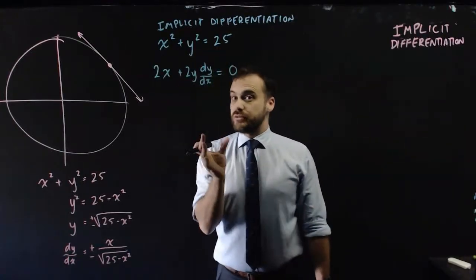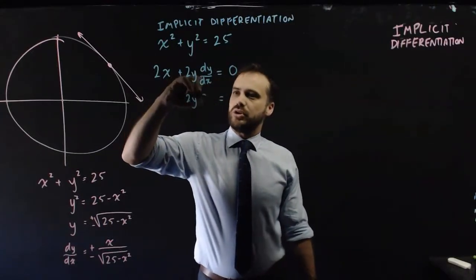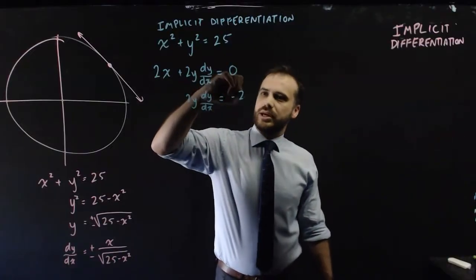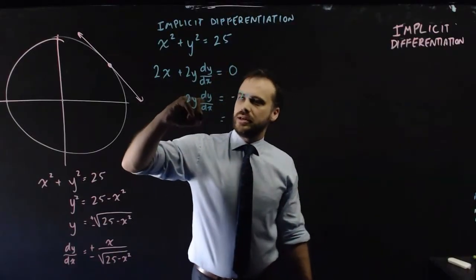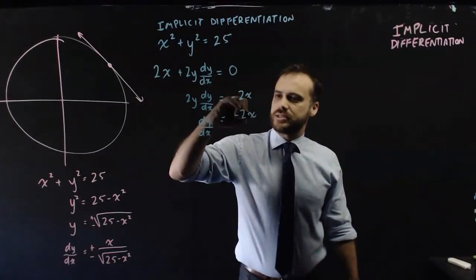And now we just rearrange to get dy/dx by itself. So it's still going to be 2y times dy/dx, negative 2x, and then dy/dx, negative 2x divided by 2y.